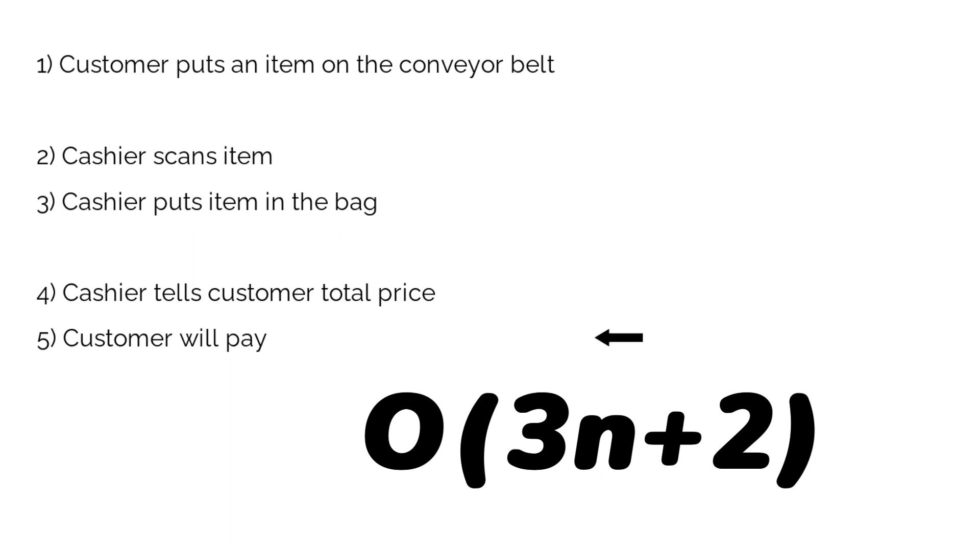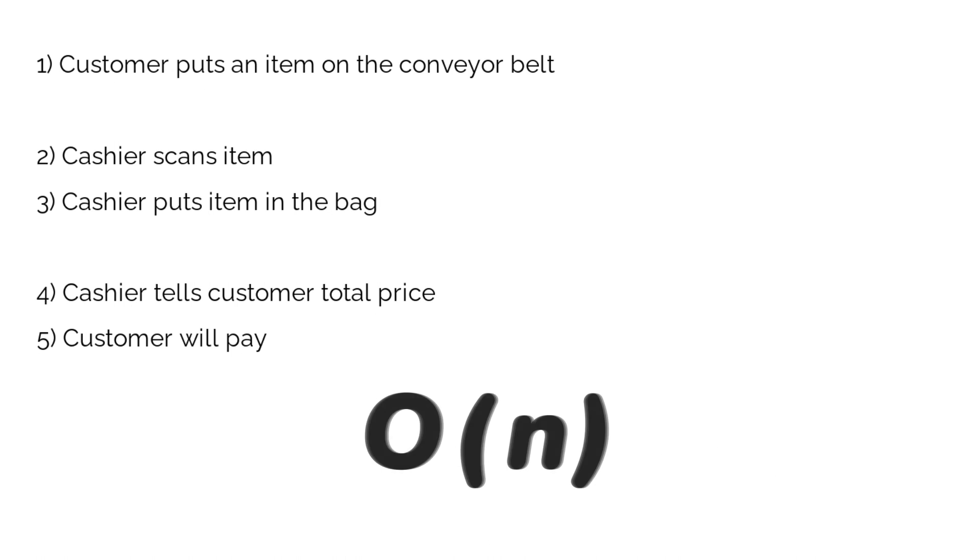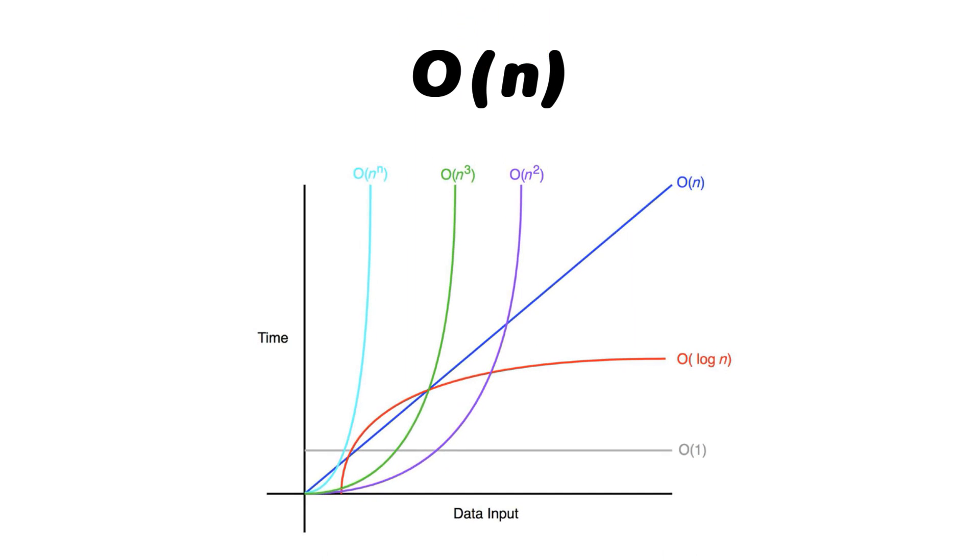The three in three times N and the two don't change as the number of items grow. In other words they remain constant. So we can get rid of them as they don't determine the growth rate anyway. So when writing the time complexity we only specify N because it's only N that influences the growth rate of the algorithm. And because the complexity grows in a linear pattern we write O(N) which stands for linear time complexity.